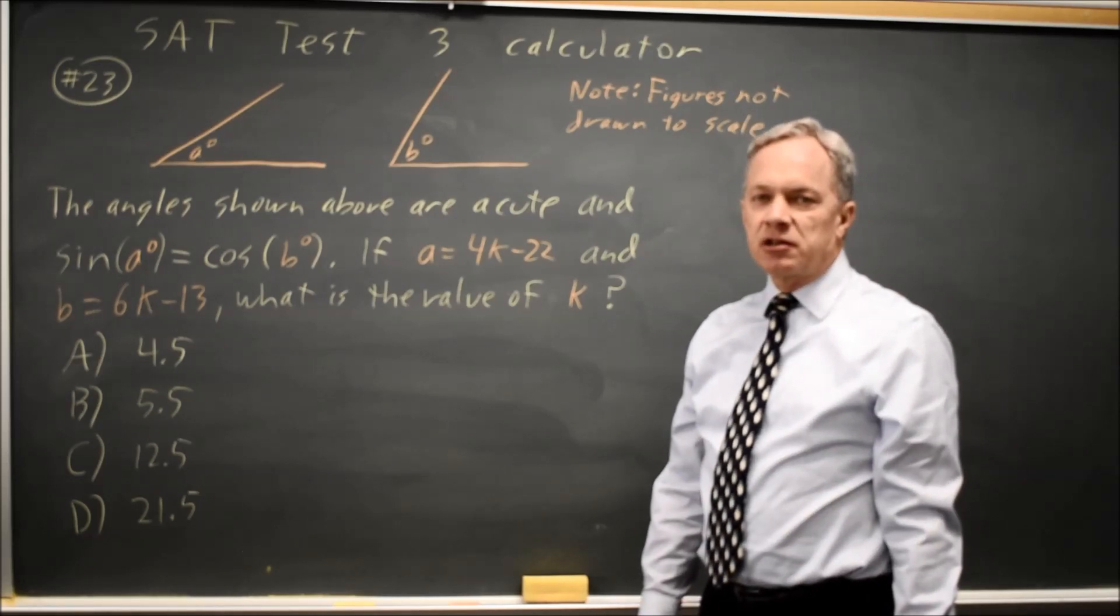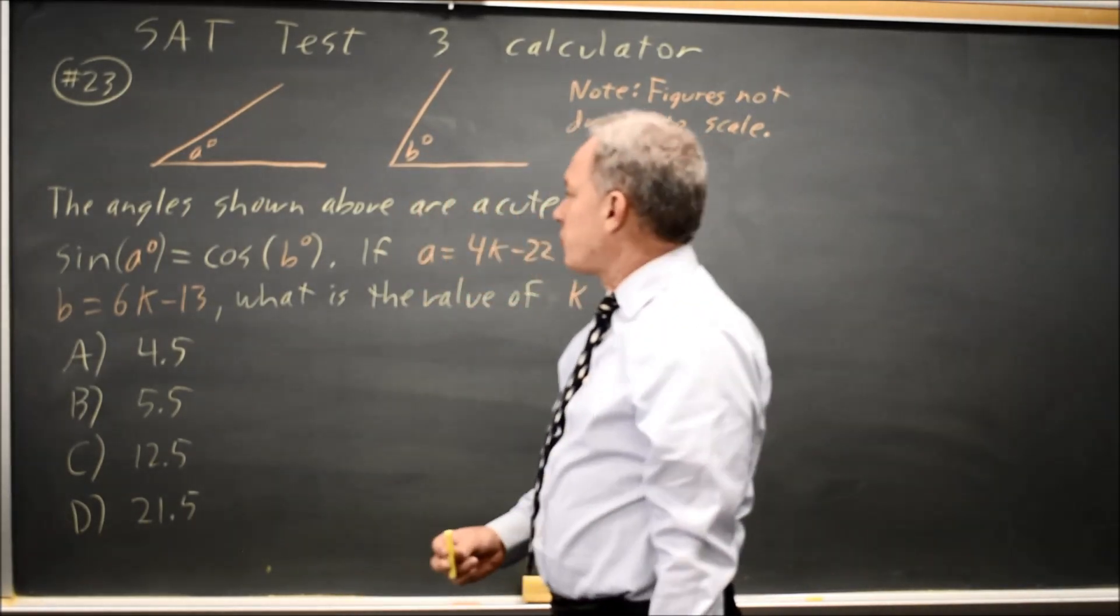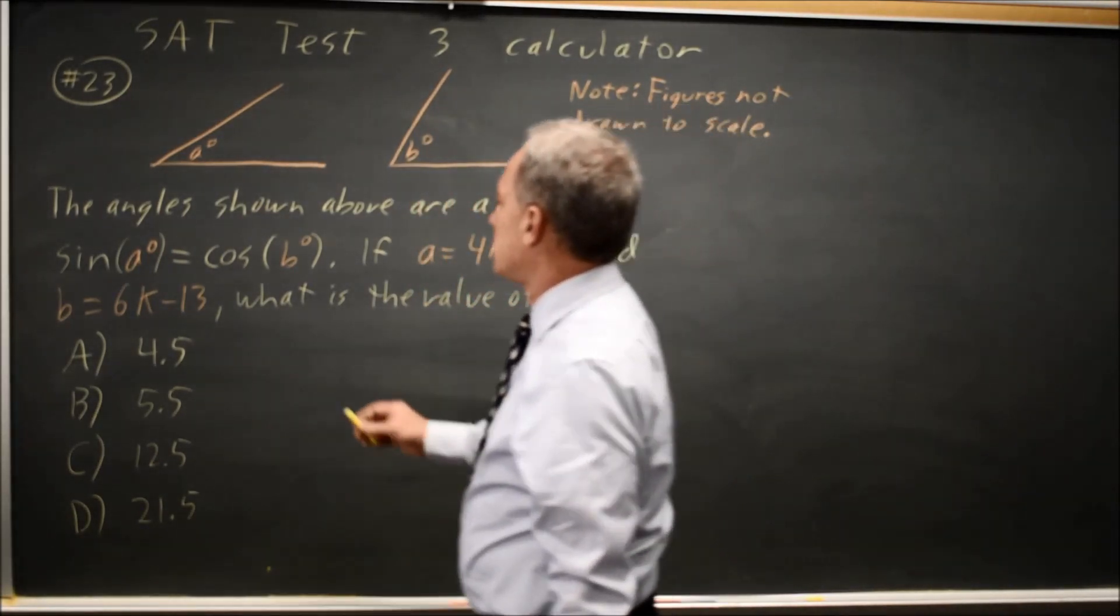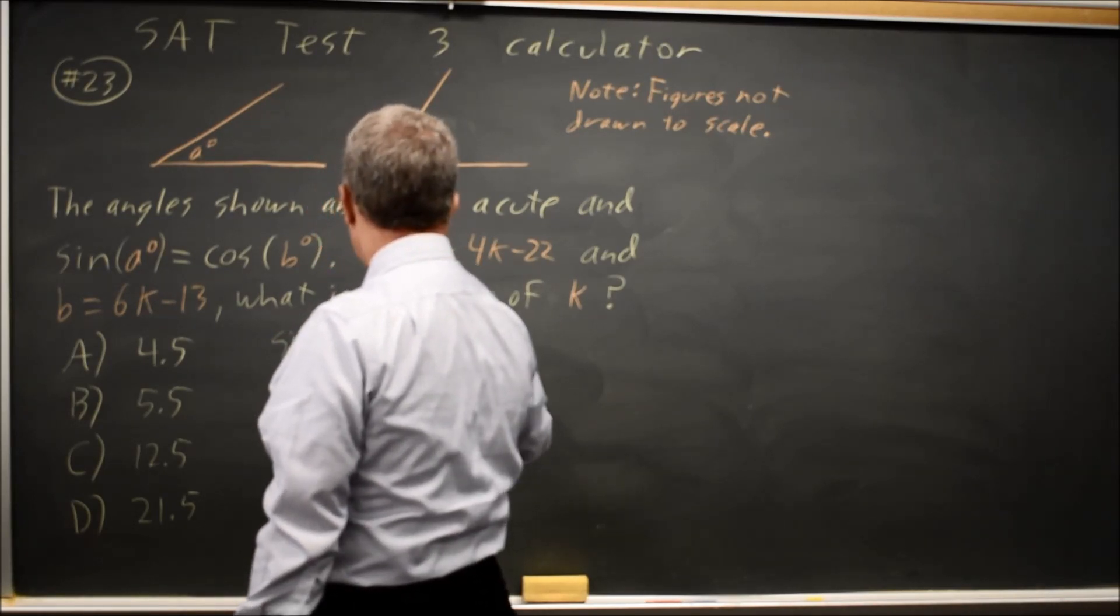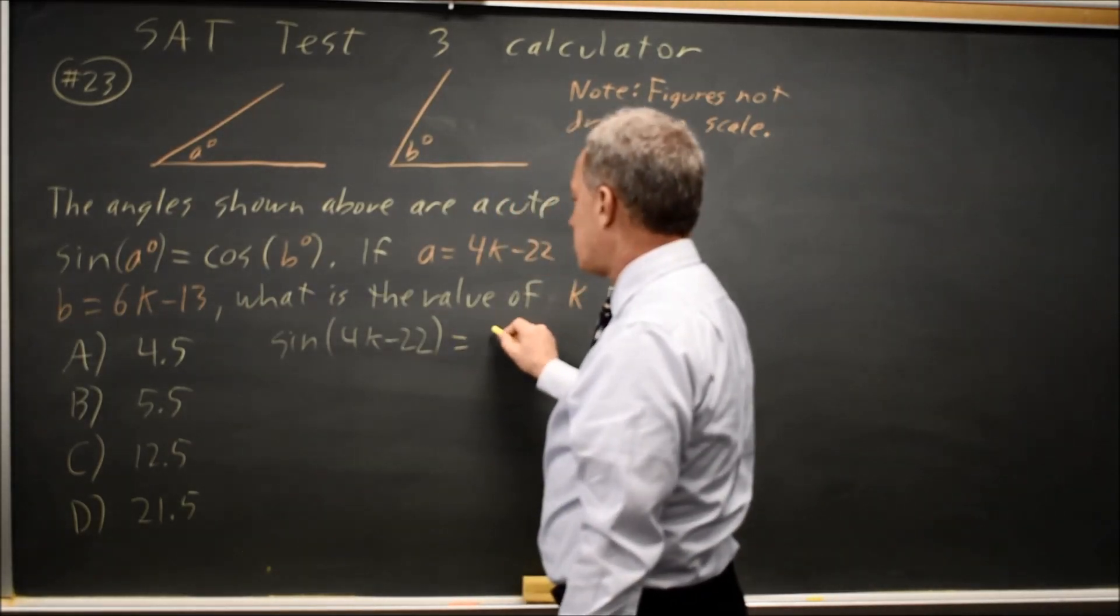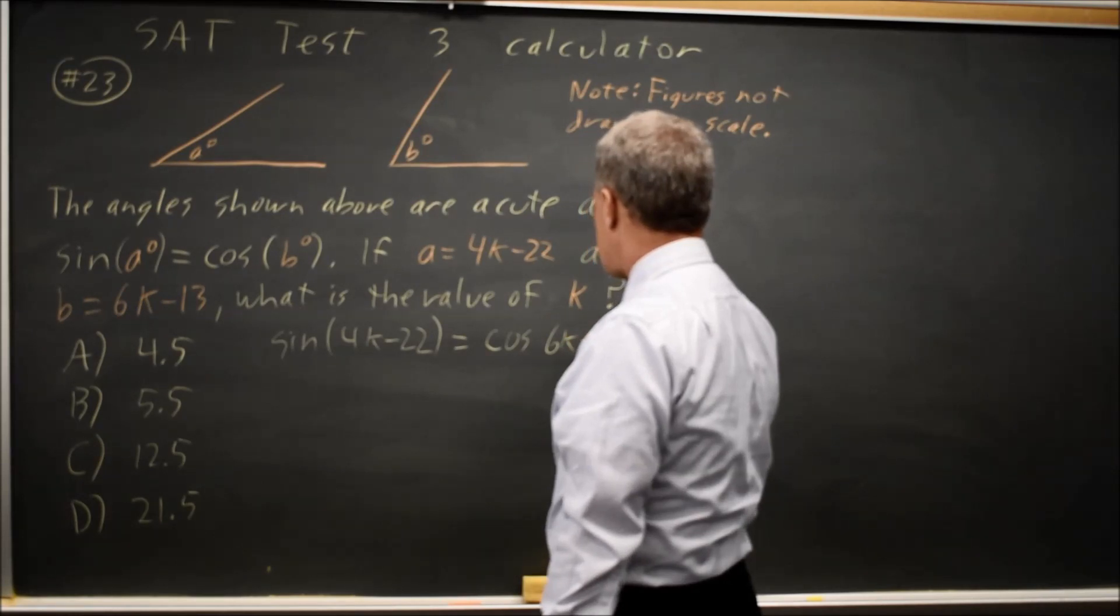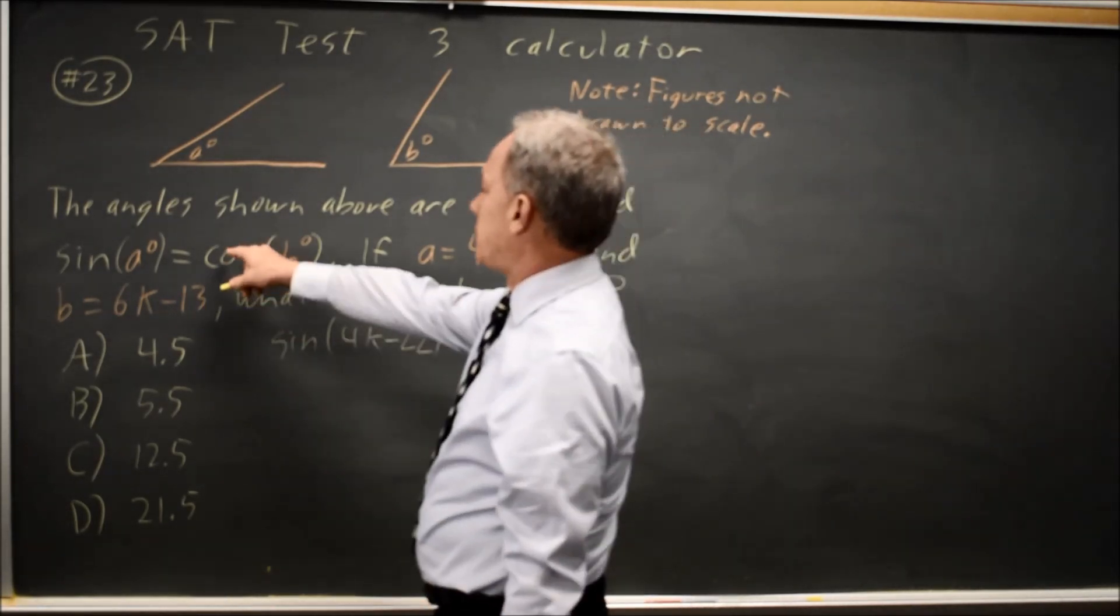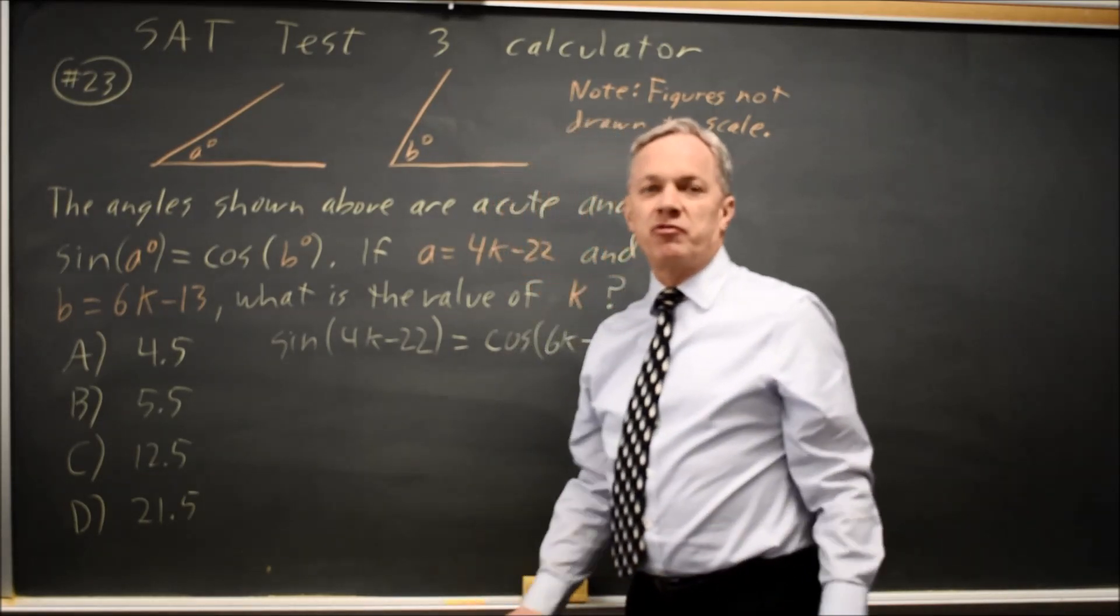Since this is a calculator question and we're under time pressure, I'm going to go to the fastest solution first. The sine of A is the sine of 4k minus 22 and the cosine of B is cosine of 6k minus 13 and we're told sine A equals cosine B. I now have an equation with only one variable.